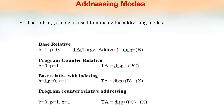Now coming to addressing modes. An instruction has an opcode and operand. The operand resides in memory, so the direct memory address can be the operand, or the content of the memory address can be the operand value. In order to identify what the operand address denotes, addressing modes are used.